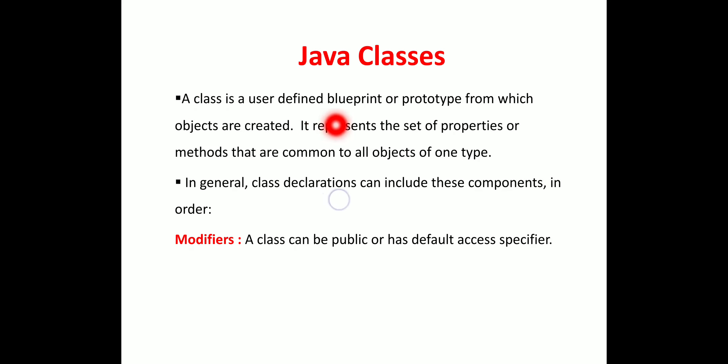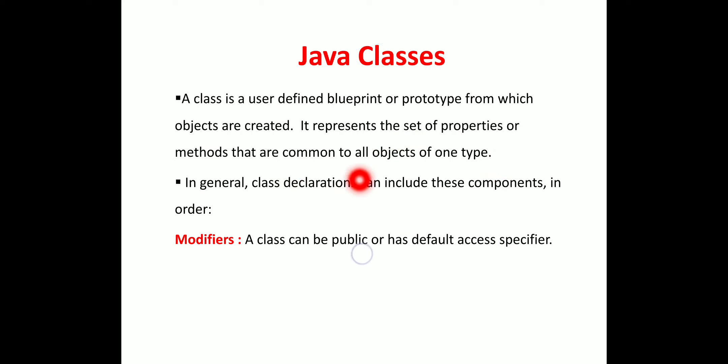A class is a user-defined blueprint or prototype from which objects are created. It represents the set of properties or methods that are common to all objects of one type. For example, student is a class, and name and row number are the properties of that class.